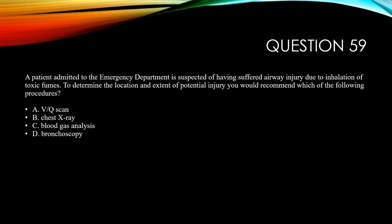Question 59. A patient admitted to the emergency department is suspected of having suffered airway injury due to inhalation of toxic fumes. To determine the location and extent of potential injury, you would recommend which of the following procedures? A, VQ scan. B, chest x-ray. C, blood gas analysis. And D, bronchoscopy.